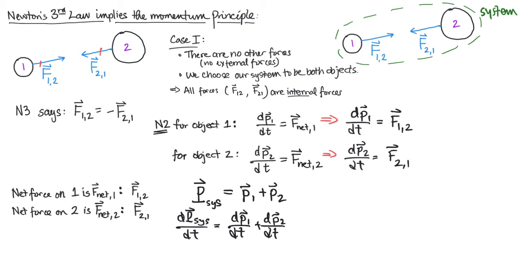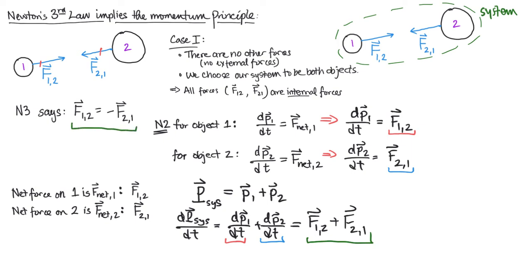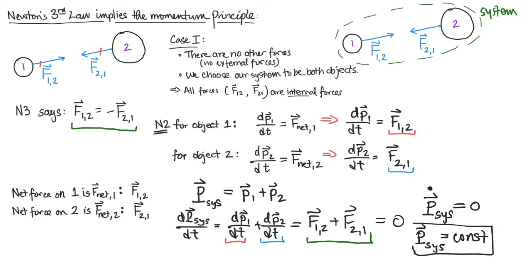We know the first term equals F1,2 and the second equals F2,1 by Newton's second law. So the rate of change of the system's momentum equals the sum of those two forces. But Newton's third law tells us that F1,2 and F2,1 are equal but opposite, so they sum to zero. This tells us the rate of change of the system's momentum is zero — meaning the system's momentum doesn't change. In other words, this system has constant momentum. That is momentum conservation.